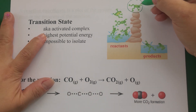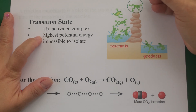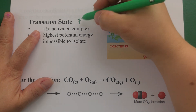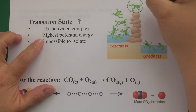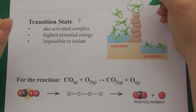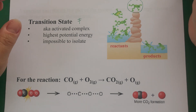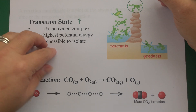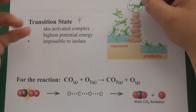The transition state is also called the activated complex — you'll see that in some textbooks. I use the symbol of a double-dagger cross to represent transition state. It is the highest potential energy point — the most energetically unfavorable situation those molecules can be in. It's impossible to isolate in most cases. With more modern technologies you can track the formation of those intermediates, but they're not stable enough in their high energy state to have a jar full of transition state.